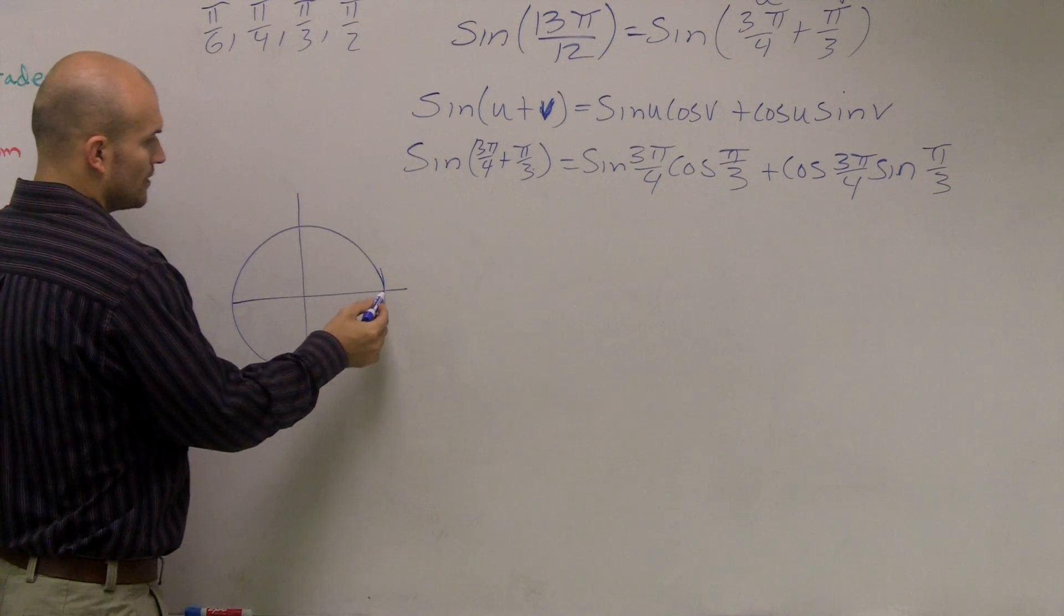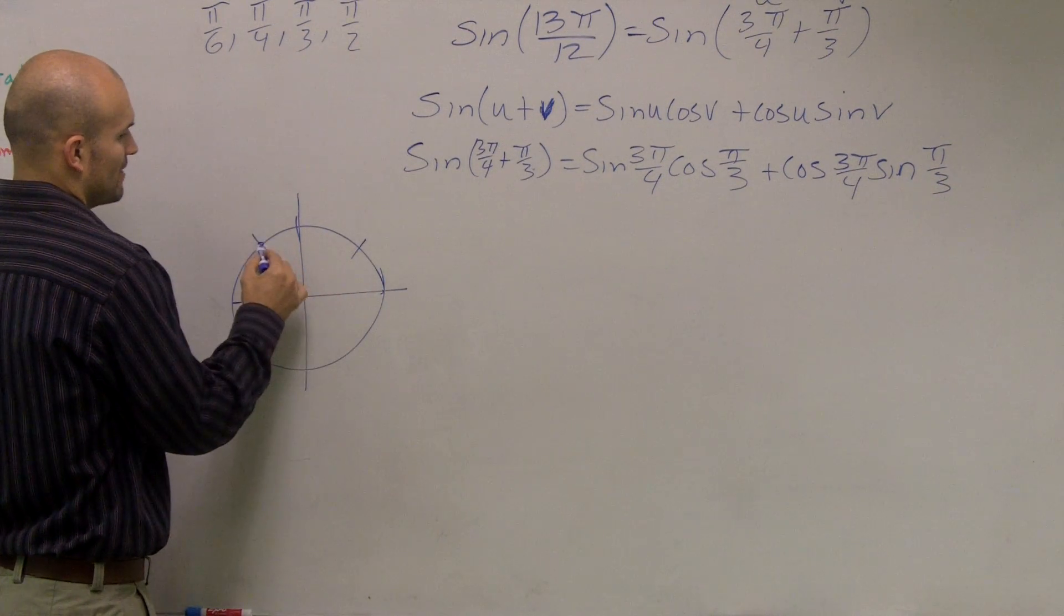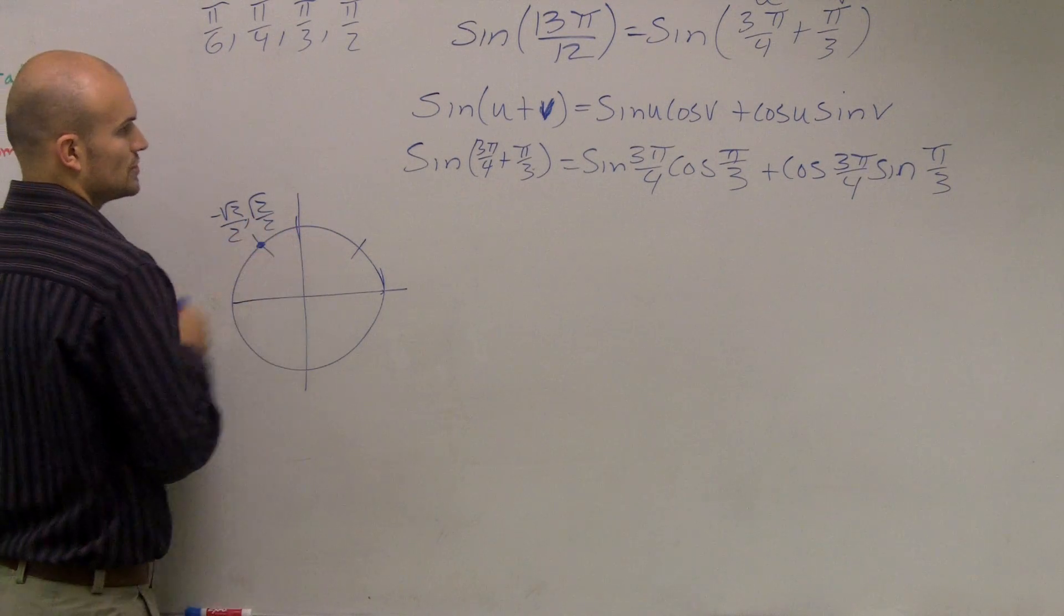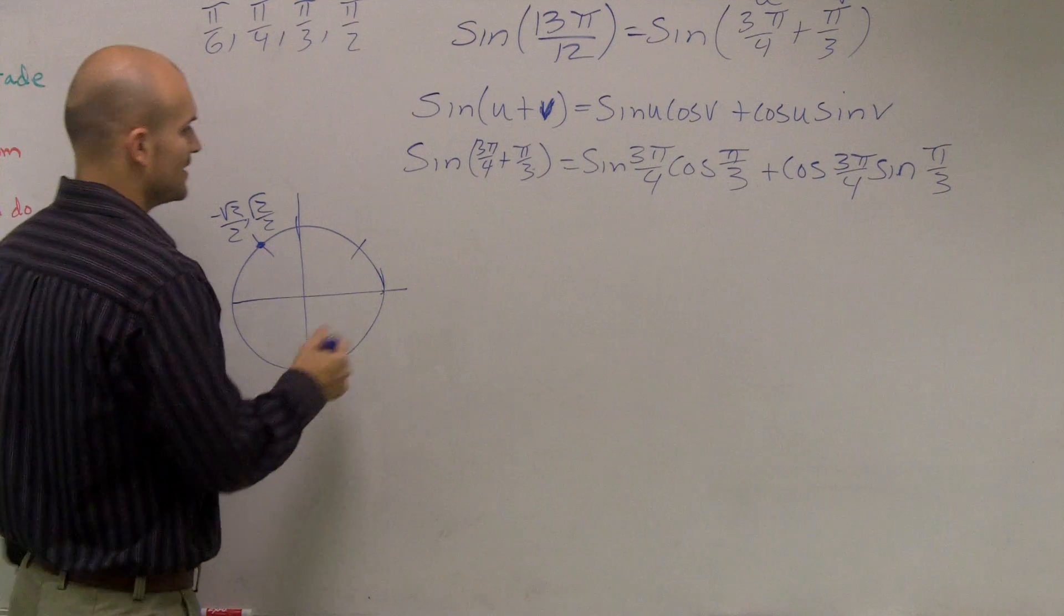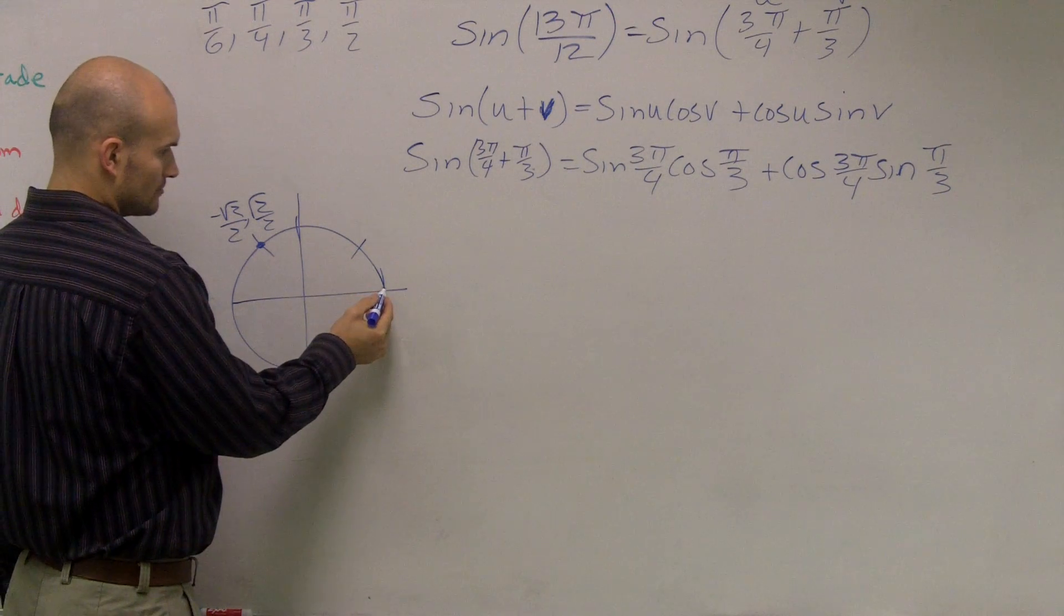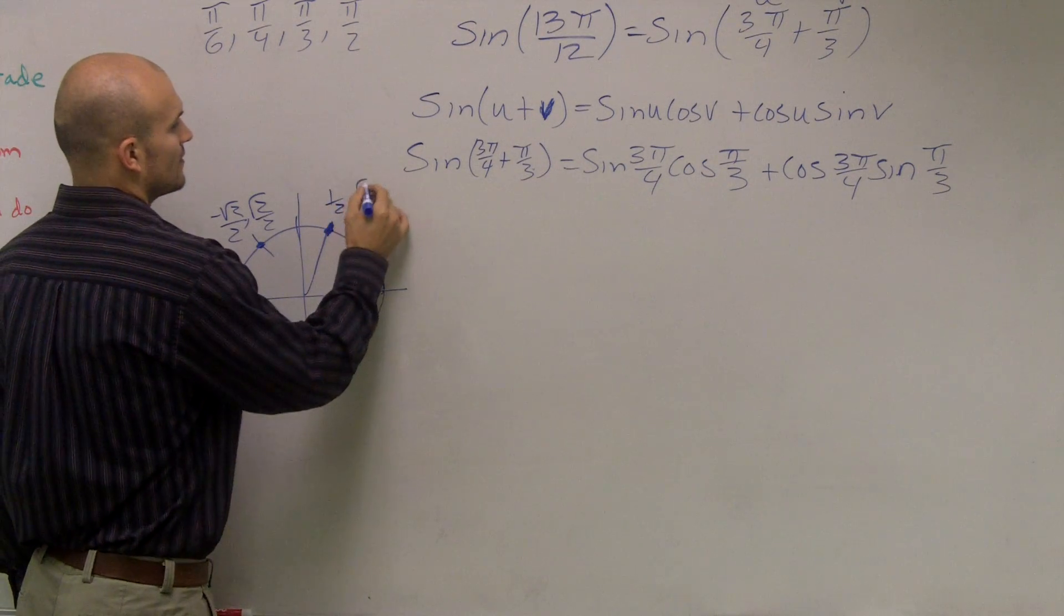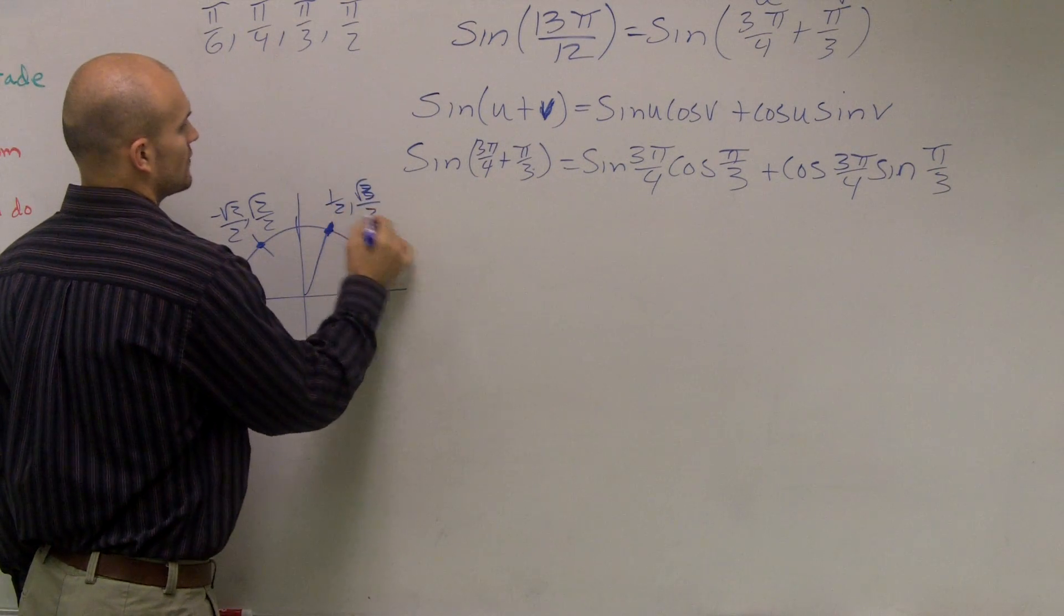When I look at this unit circle, the sine of 3π over 4, 1π, 2π, 3π over 4 is right here. That angle is negative square root of 2 over 2 comma radical 2 over 2. And the cosine of π over 3 is going to be this angle right here and that point is 1 half, radical 3 over 2.